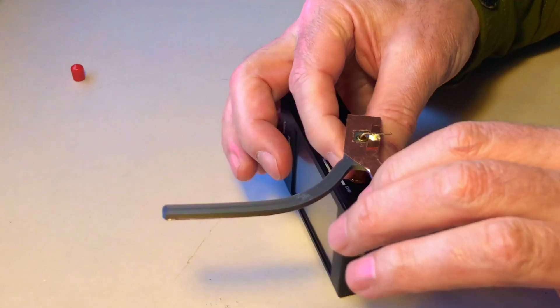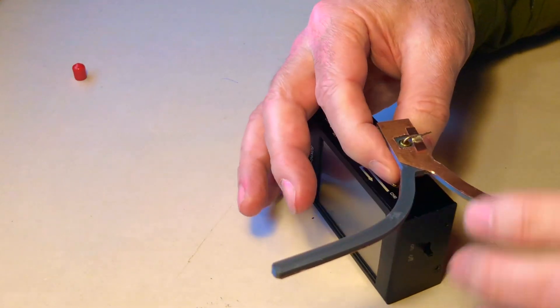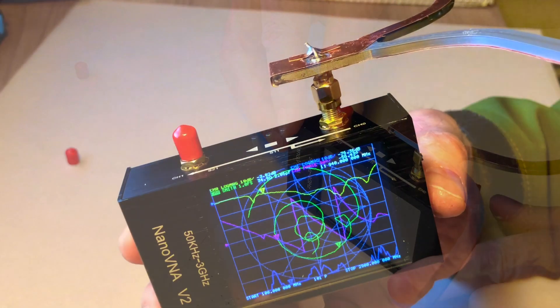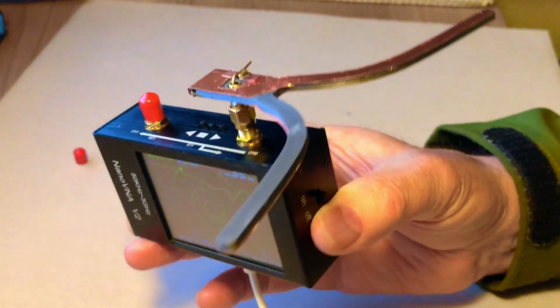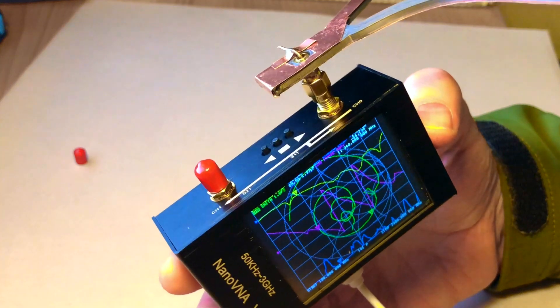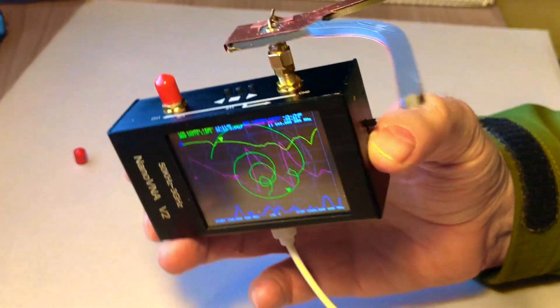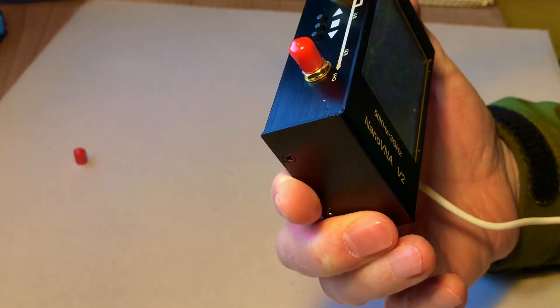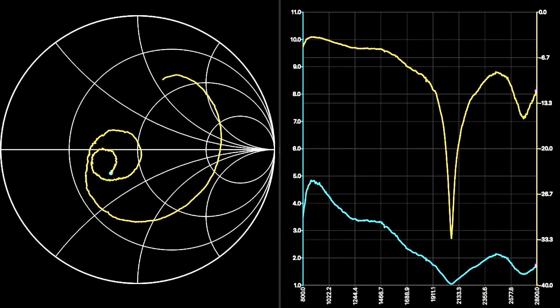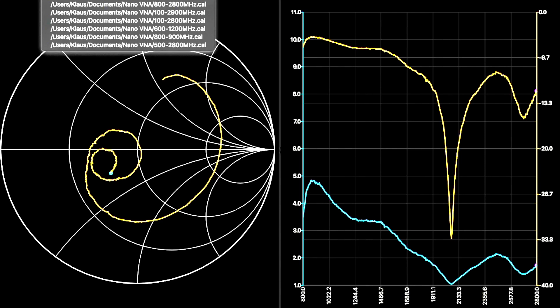For building and tuning antennas, the Nano VNA is a blessing. Even when the device cannot be as accurate as expensive professional devices, it is completely sufficient for our purpose. I like to use it together with its PC software, because it allows me to save my calibrations for specific frequency ranges.